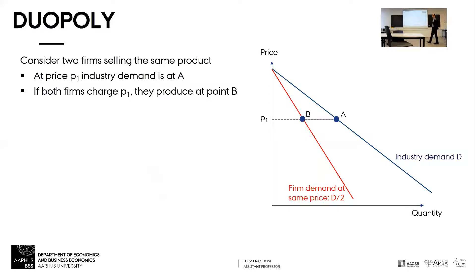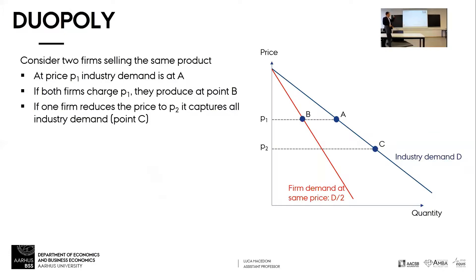What happens if I reduce the price by a bunch? If we're selling exactly the same product, then if I reduce the price to P2, I get all of the demand at point C. This is Bertrand competition.